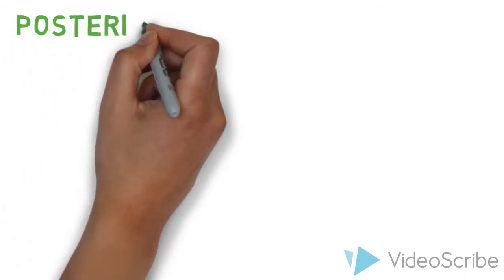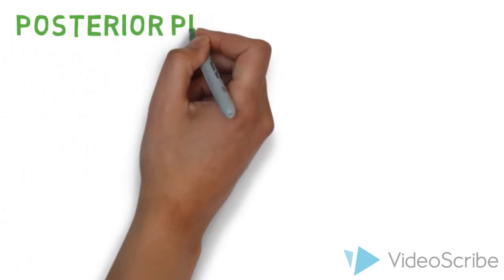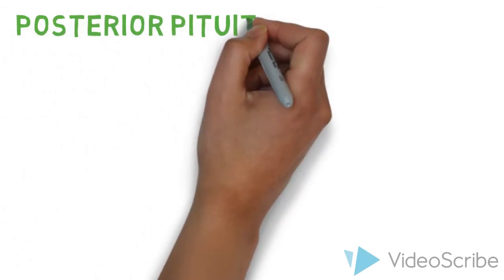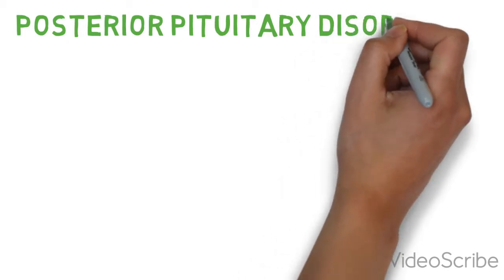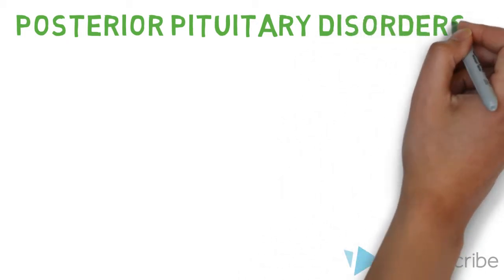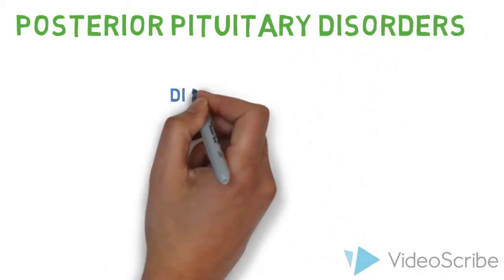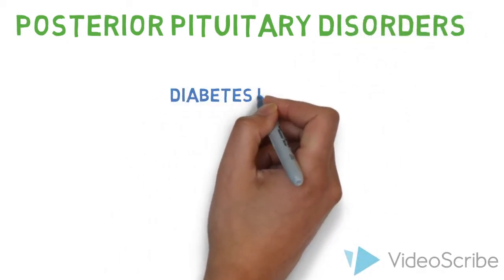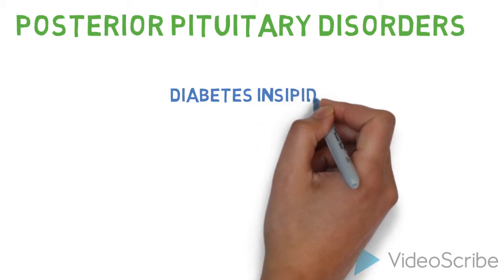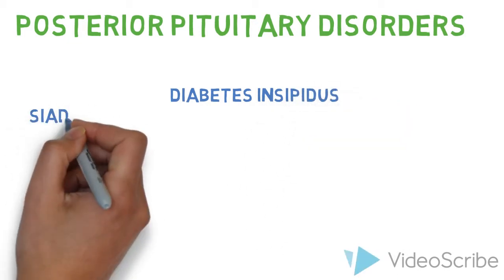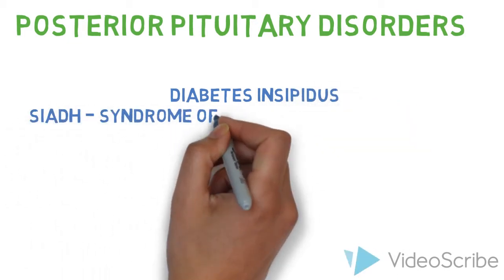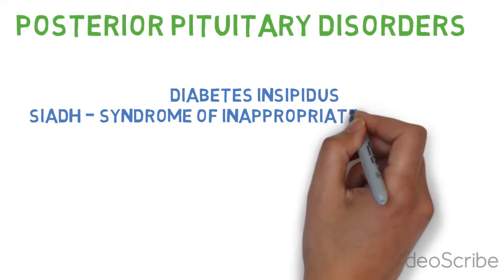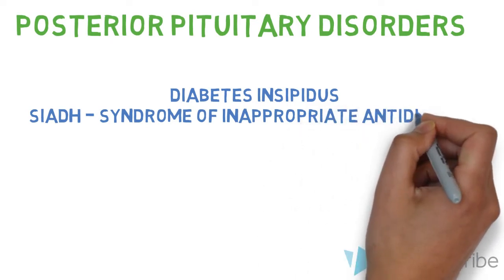Moving on to posterior pituitary disorders, here we're going to see diabetes insipidus, because it disrupts the storage, production, and release of ADH. And SIADH is excessive ADH activity with water retention and diluted hyponatremia.